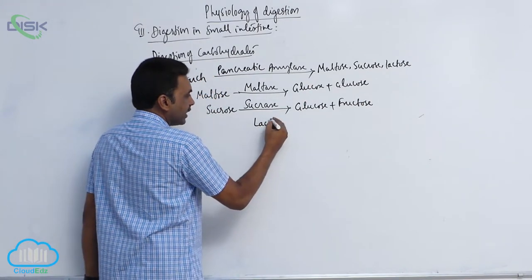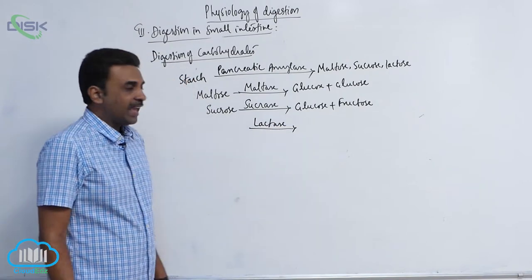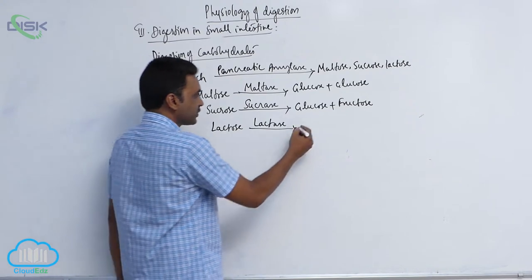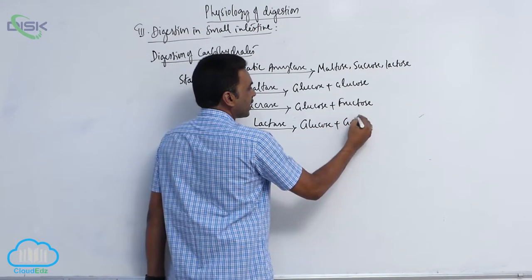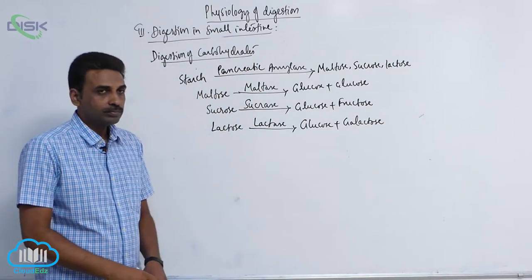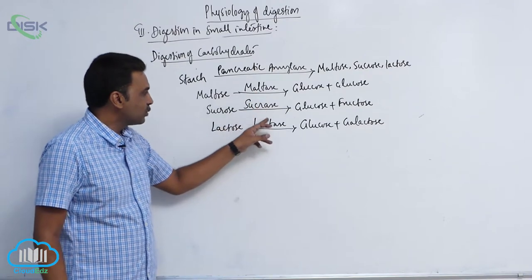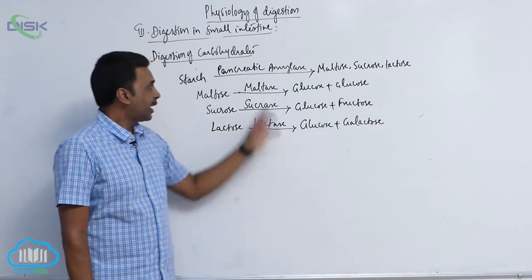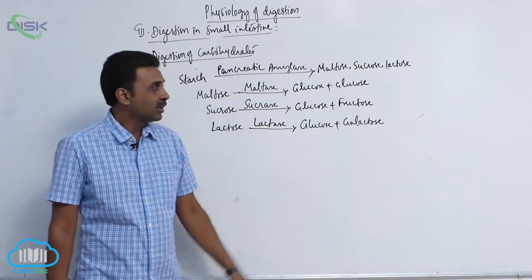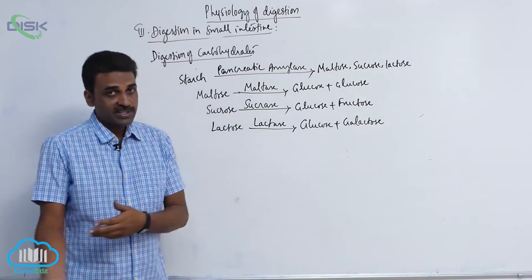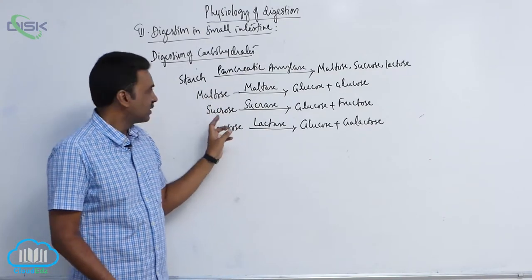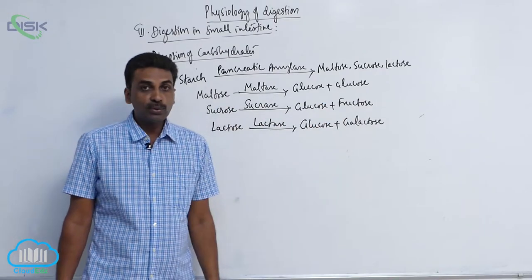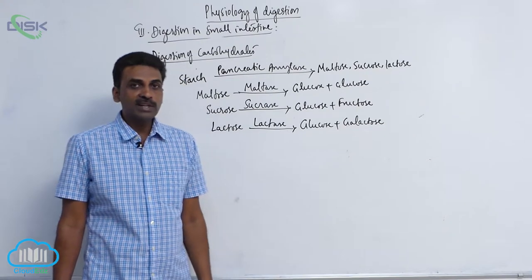Likewise, lactase acts on lactose to produce glucose plus galactose. All three enzymes — maltase, sucrase, and lactase — are present in intestinal juice. Pancreatic amylase converts starch into disaccharides (maltose, sucrose, lactose), and then their respective intestinal enzymes act: maltase produces glucose and glucose, sucrase produces glucose and fructose, lactase produces glucose and galactose.